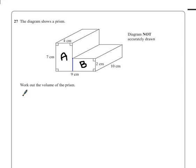So if we look at the area of rectangle A, we have a height of 7 and a width of 4. So we can find the area of that rectangle by multiplying those two values together. 7 times 4 is 28, so that's 28 centimeters squared.